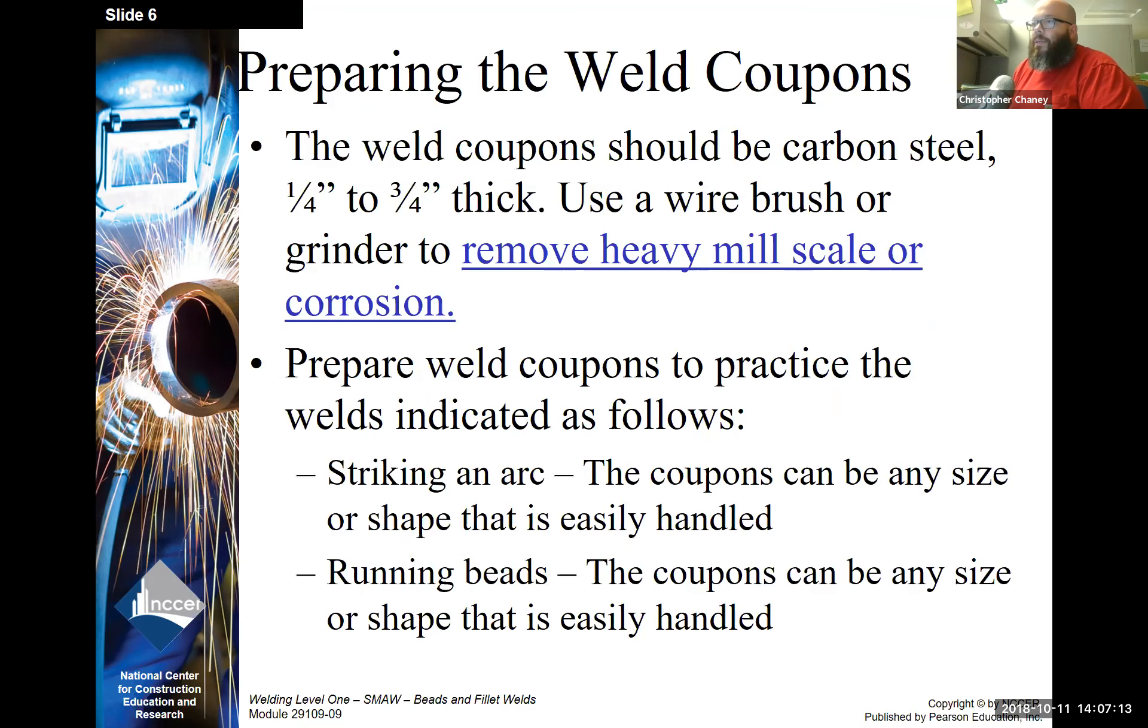Preparing weld coupons. Weld coupons should be carbon steel, one quarter to three quarters inch thick. Use a wire brush or grinder to remove heavy mill scale or corrosion. Prepare weld coupons to practice the following welds. Striking an arc: the coupons can be any size or shape that can be easily handled. Running beads: same thing, coupons can be any size or shape.